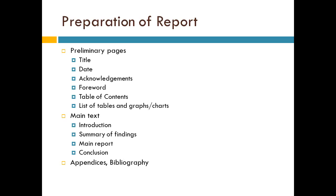Now, preparation of the report. Everything has been analyzed, conclusions have been drawn, and suggestions have been made. Now we prepare the report. To prepare the report, there are three components. First is the preliminary page — which includes the problem title, date, acknowledgement, foreword, table of contents, list of tables, graphs and charts. Then the main text — which includes introduction, summary of findings, main report, and conclusion. Finally, appendices and bibliographies.